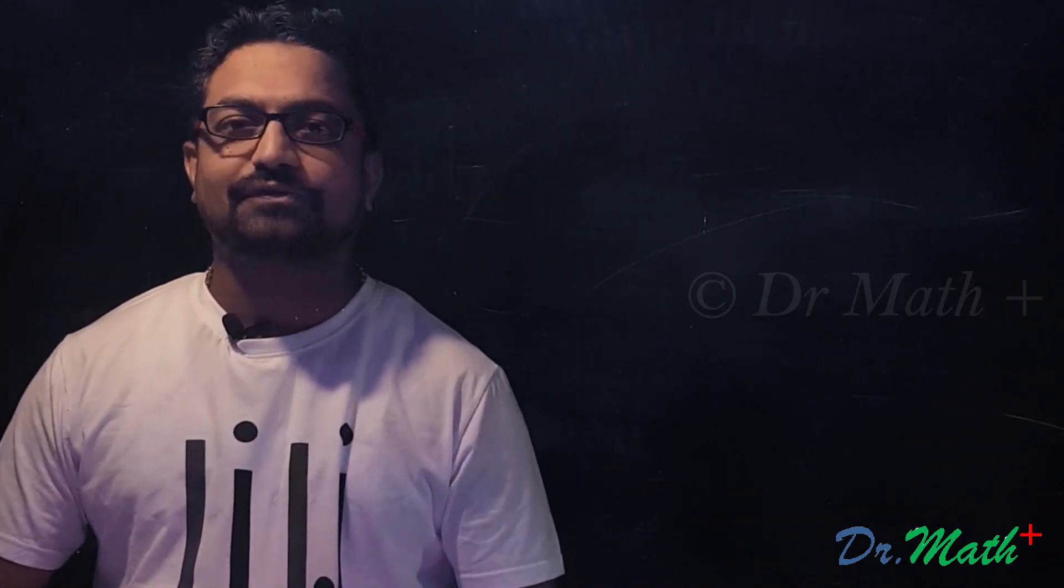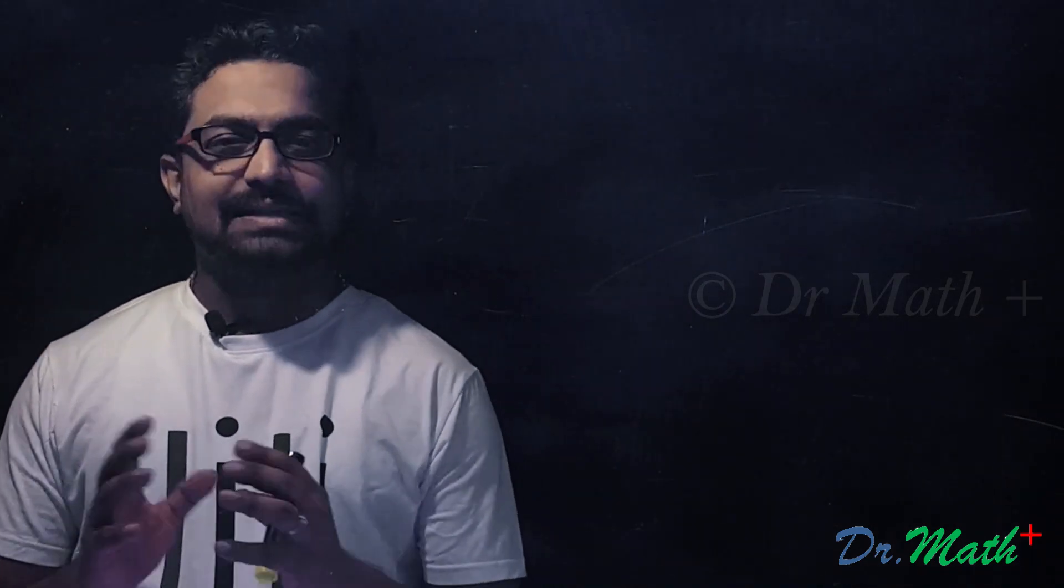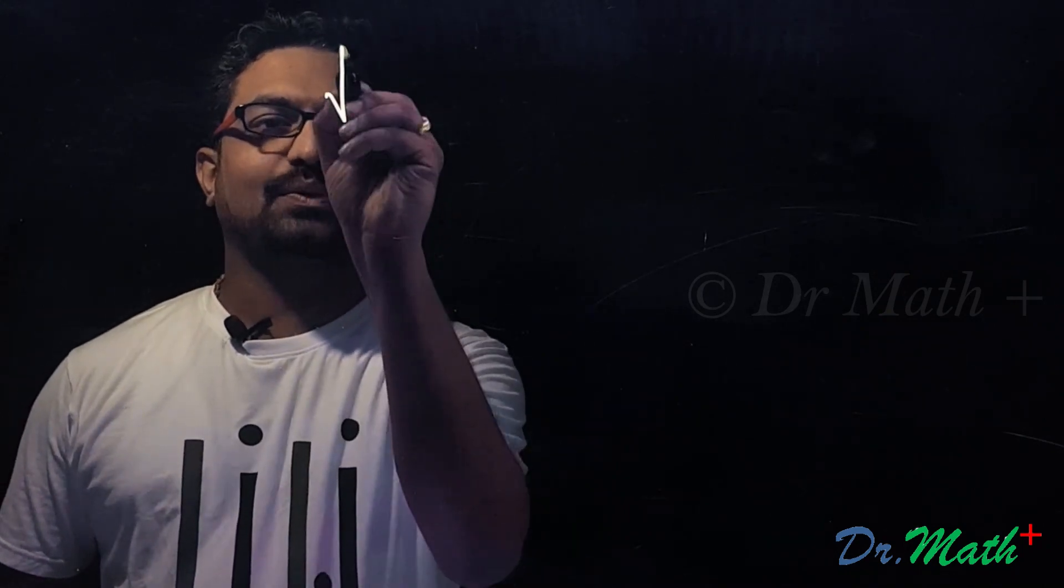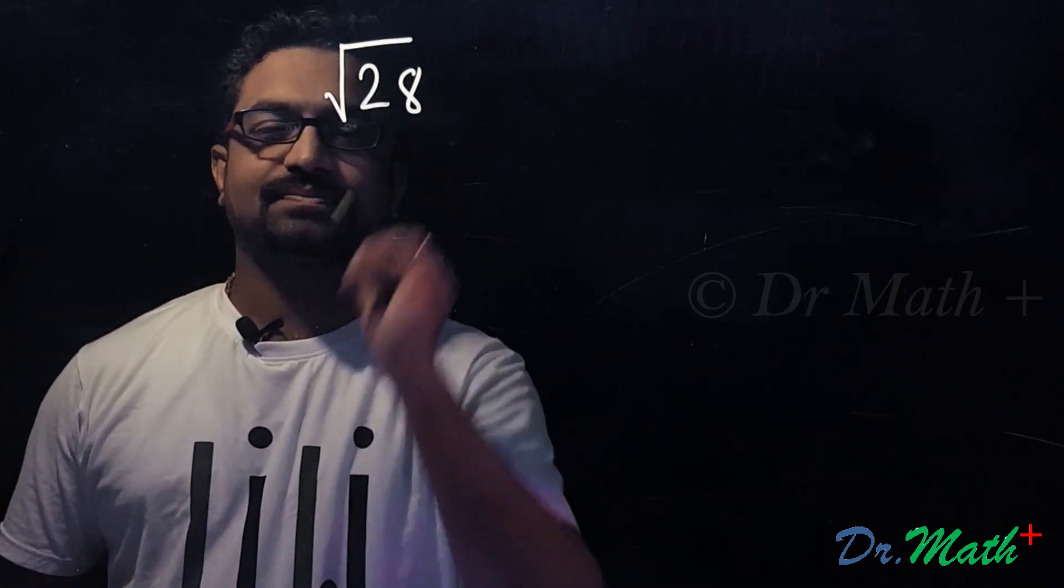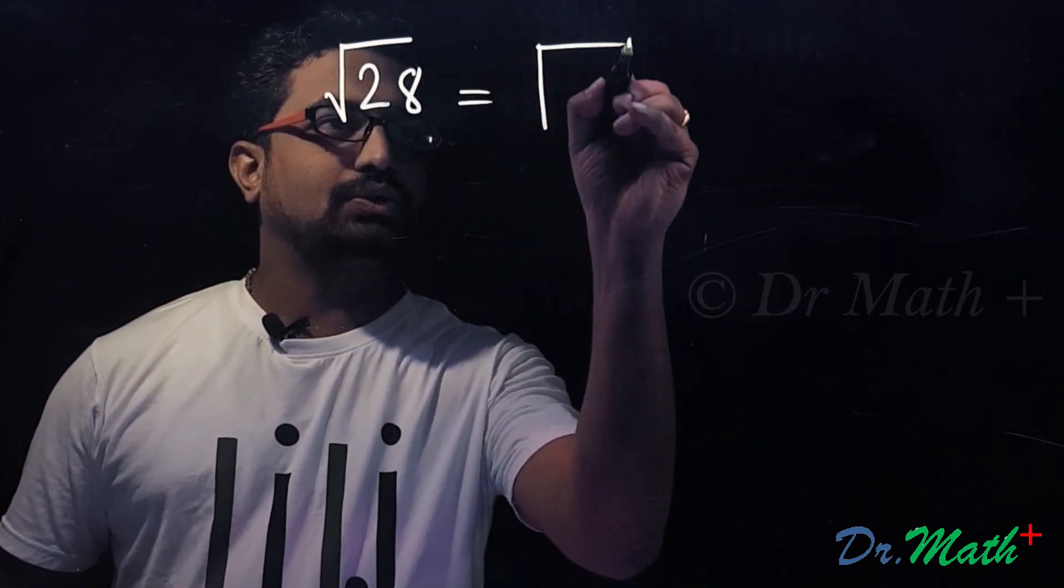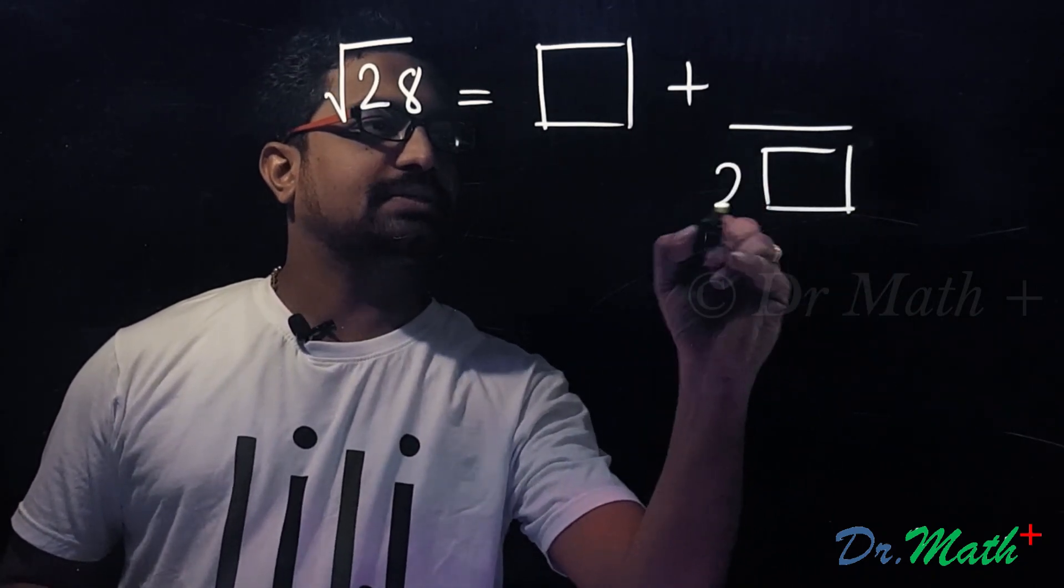For this, we will take some examples. Let's say we have to find the square root of 28. Step number one is to draw two squares like this. Write 2 here and a small circle. We just need to fill these three blanks.